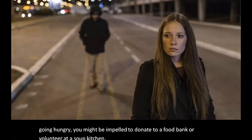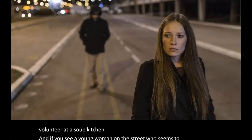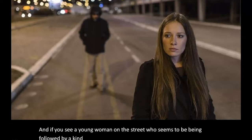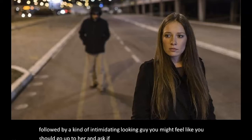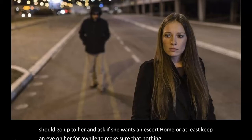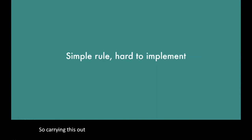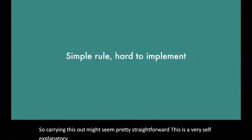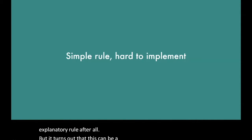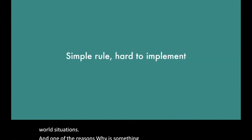And if you see a young woman on the street who seems to be being followed by an intimidating-looking guy, you might feel like you should go up to her and ask if she wants an escort home, or at least keep an eye on her to make sure nothing bad happens. But it turns out this can be a lot harder in practice in messy, real-world situations. And one of the reasons why is something that we call the bystander effect.